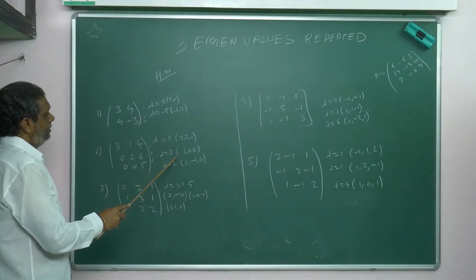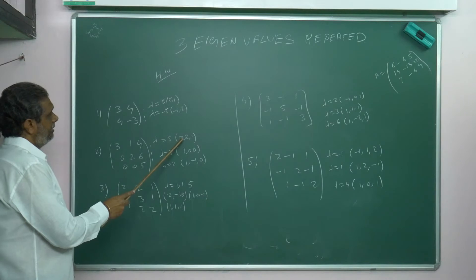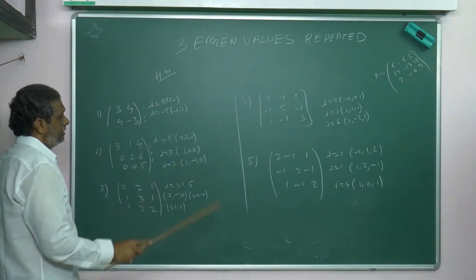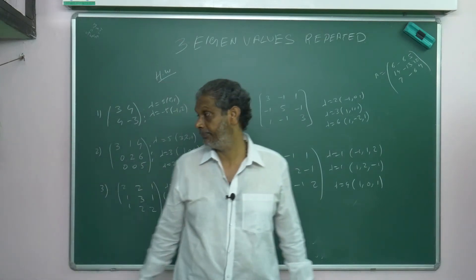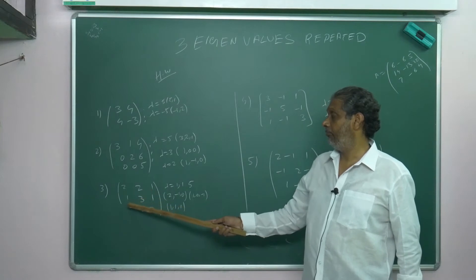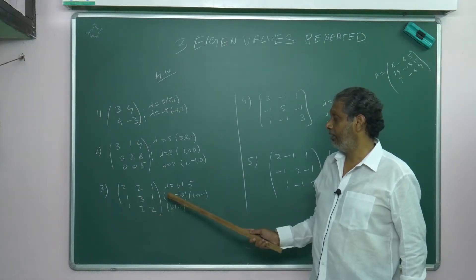When lambda is 5, my eigenvector is (3, 2, 1). Three means (1, 0, 0). Two means (1, -1, 0). Third problem: 2, 2, 1, 1, 3, 1, 1, 2, 2. Here, two eigenvalues are repeated.